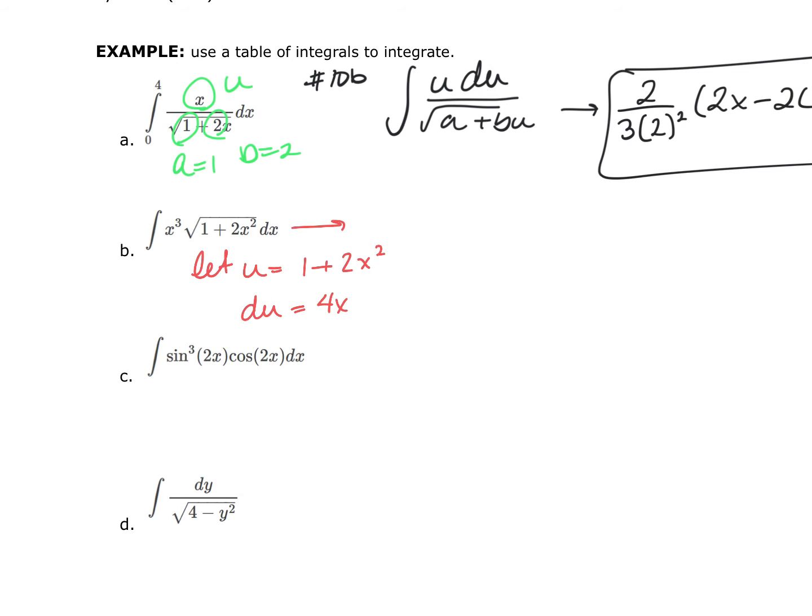Now, I'm going to rewrite this integration as x squared multiplied by x multiplied by the square root of 1 plus 2x squared dx. And the reason I'm going to do that is because I'm going to have 1 fourth du is going to give me the x dx. So I can replace this x and this dx with 1 fourth du.